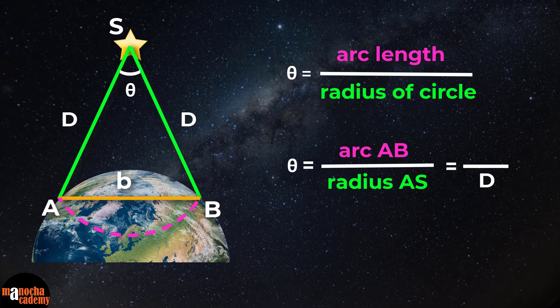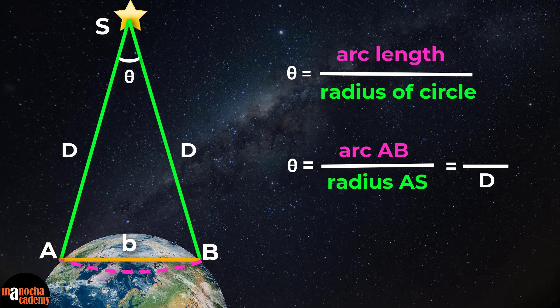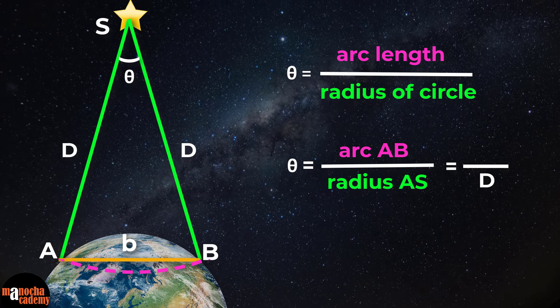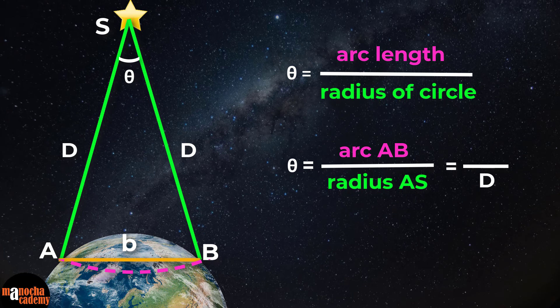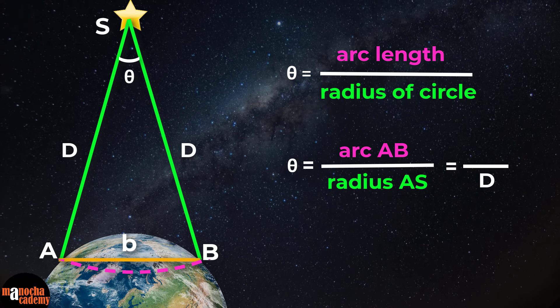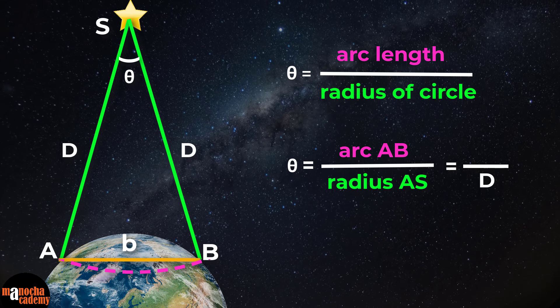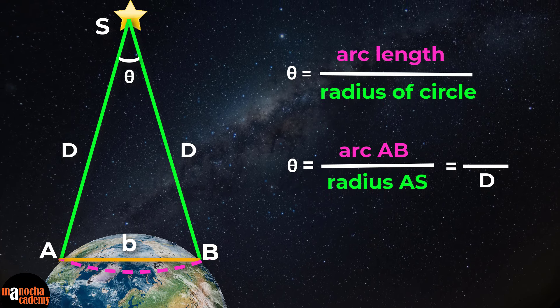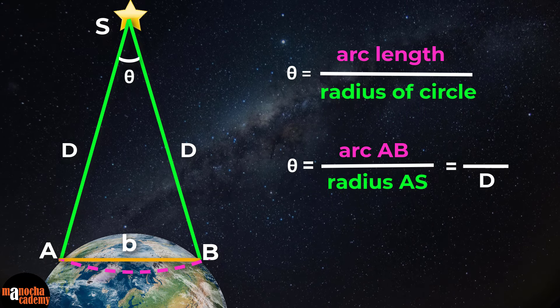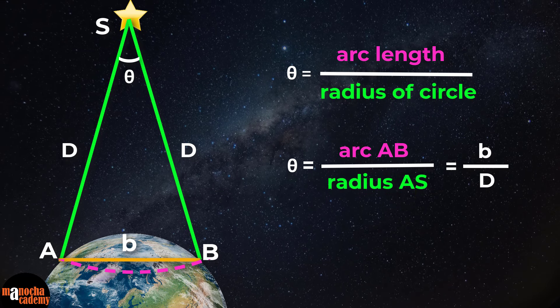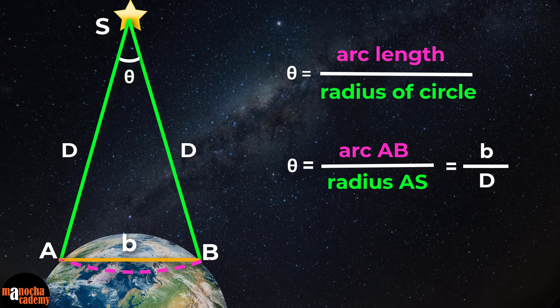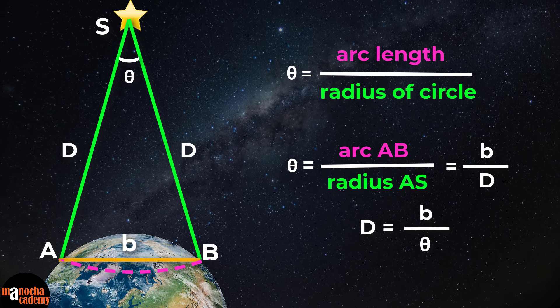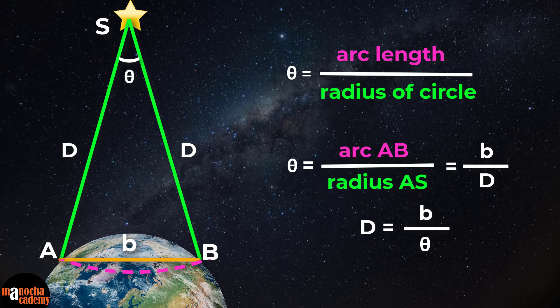Now since the star is really far away, the angle theta will be very small. So we can say that approximately the arc length AB will equal to side AB of the triangle. They'll be approximately the same here. So we can say angle theta in radians is B divided by D. So rearranging the equation, the distance of the star D is B divided by the angle theta in radians.